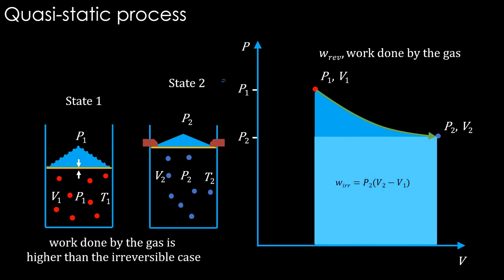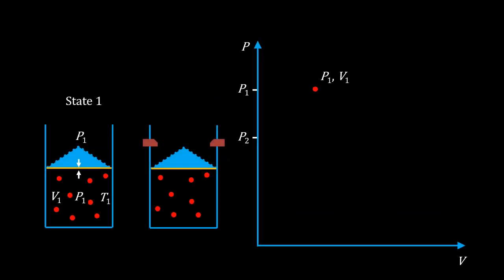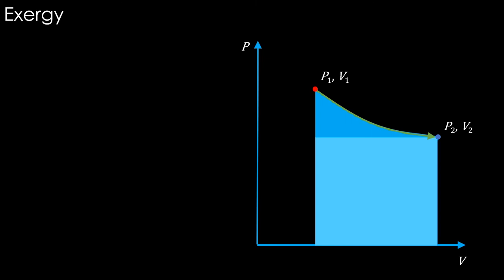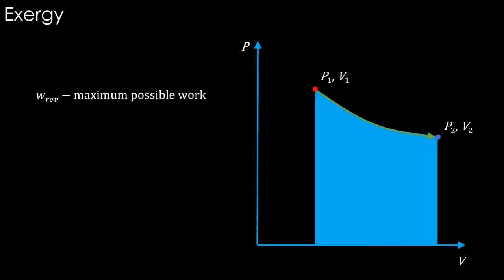A related concept is exergy. We have seen that when a system goes from one state to another, it can do work. Is there a limit to that work? The answer is yes: the work in a reversible process. It is not just more than that in the irreversible case, it is the maximum possible work. Remember, we can reduce the irreversibility by reducing the size of the mass to ever more finer grains of sand. The limit of that is the reversible case, and we achieve the maximum work in that limit. So the maximum possible work is also called as exergy.